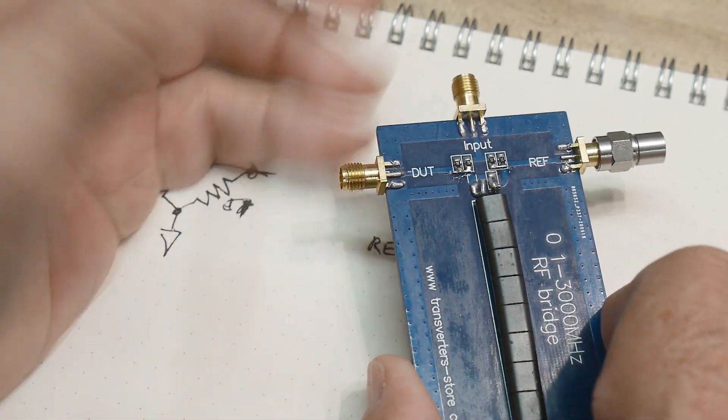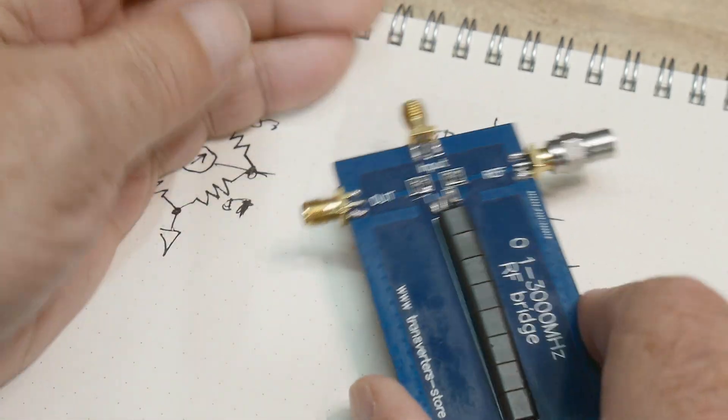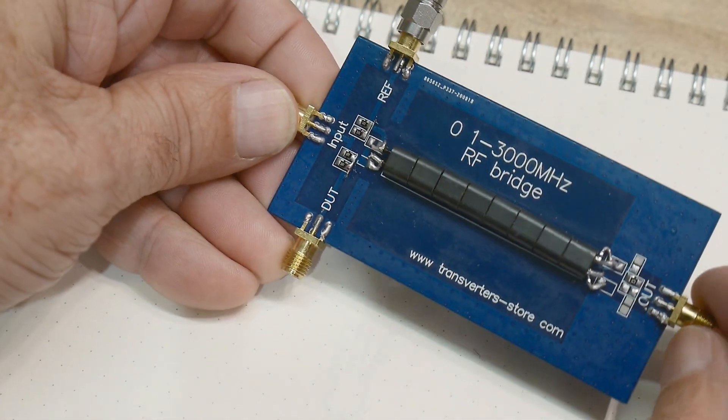And if it has 100 ohms, then it'll have a VSWR of two, two to one, instead of one to one. And so that's the way we're going to use this thing.